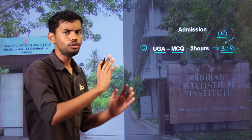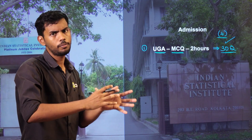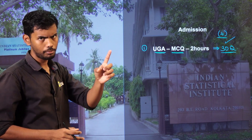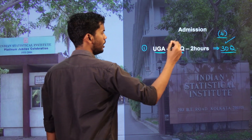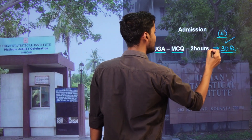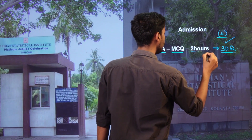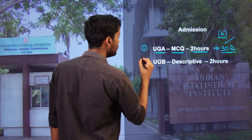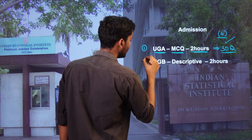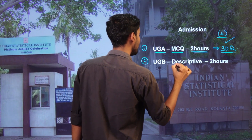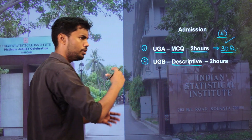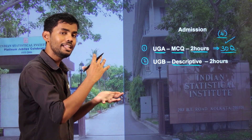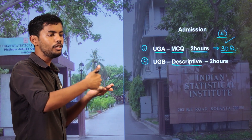There are no negative marks. The exam duration is two hours. The second paper is UGB, which is a descriptive type question paper. It has 8 questions which you must solve step by step with full explanation.